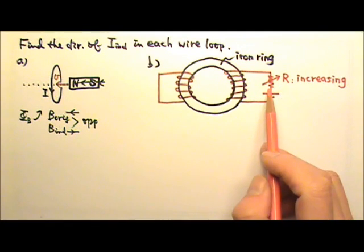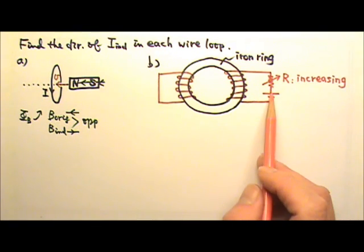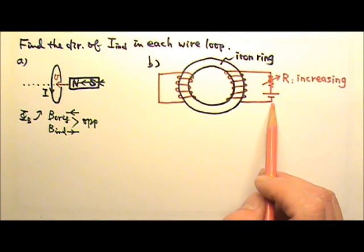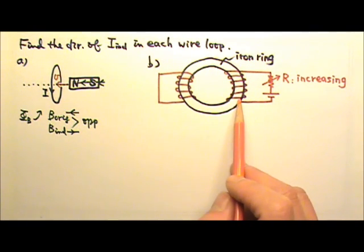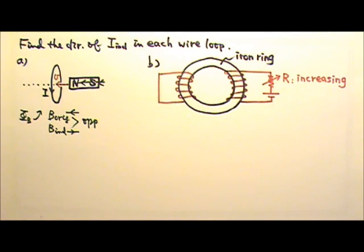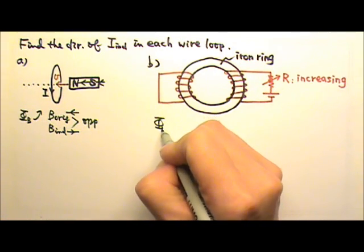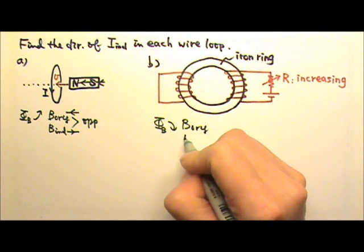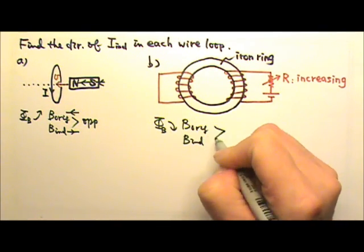Because the resistance over here is increasing, that means the electric current in this wire loop is decreasing. That means it will produce a weaker magnetic field. So in this case, the magnetic flux is decreasing.